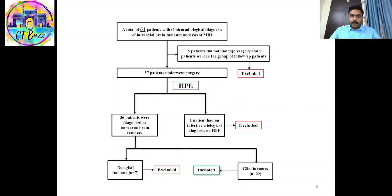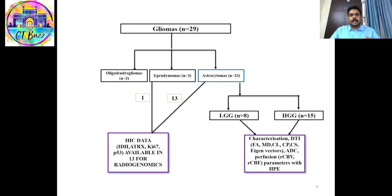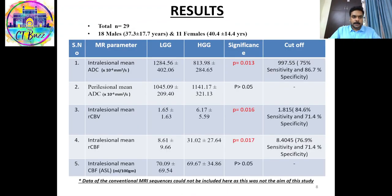We included a total of 61 patients, among which 15 did not undergo surgery. Of the remaining, 36 were intraxial brain tumors; 7 were of non-glial lineage and 29 were of glial lineage. Among the 29 gliomas, 3 were oligodendrogliomas, 3 were ependymomas, and 23 were astrocytomas. Of these, 1 ependymoma and 13 astrocytomas had IHC data available. Among the 23 astrocytomas, 8 were low-grade and 15 were high-grade, used for conventional and advanced MRI characterization.